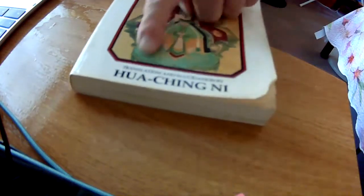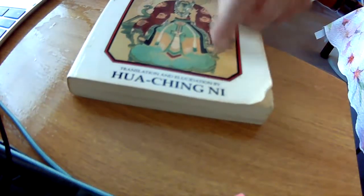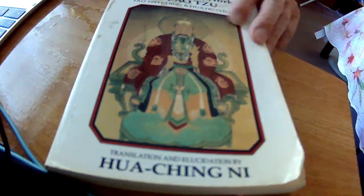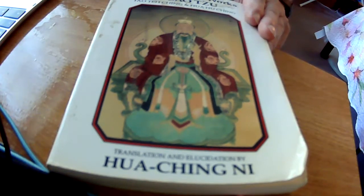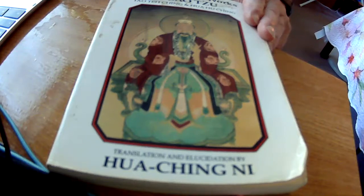You see his name right there, Hua Ching Ni. And this is the first book on the Tao Te Ching. But he also adds a second book to it, which is called Hua Hu Ching.